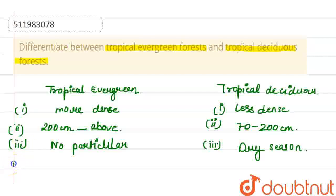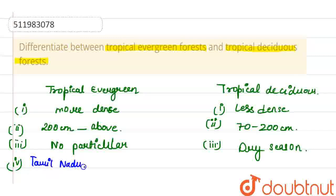The states where we find tropical evergreen forests are Tamil Nadu, Kerala, Karnataka, and Maharashtra.